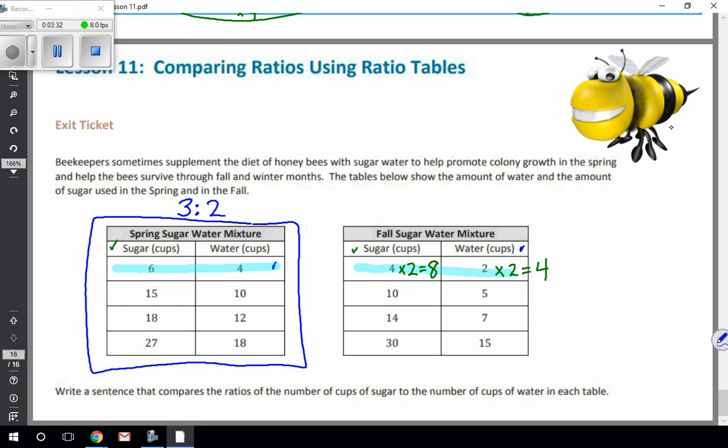I know 3 times 2 is 6, 2 times 2 is 4. I can compare it to 27 because 3 times 9 is 27, 2 times 9 is 18. So every single number, a pair of ratios in here is equivalent to 3 to 2.